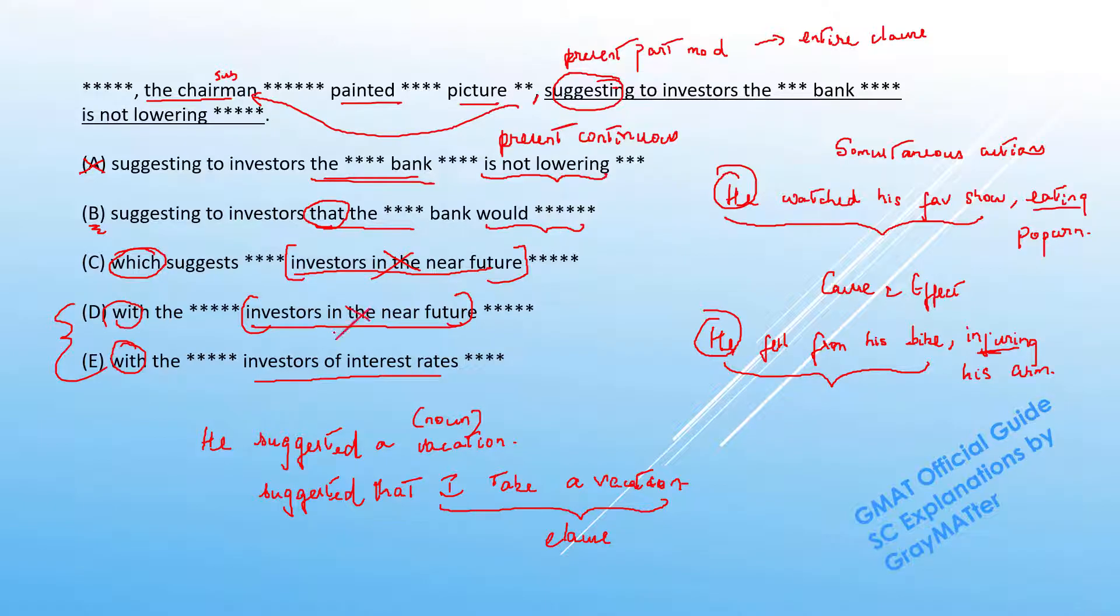D has the same problem. D goes off. Now E has a shift but again E says "investors of interest rates." What does that even mean? Are they investors of interest rates? No. It's about the bank doing something with these interest rates. So we can see that C, D, and E kind of distort the meaning by using these misplaced prepositional phrases.